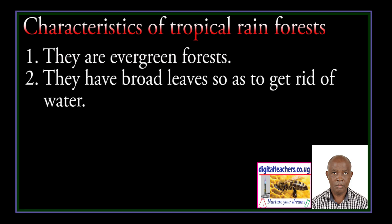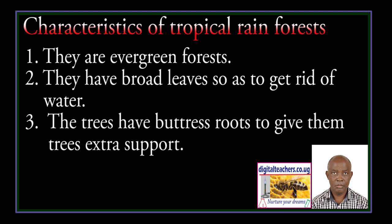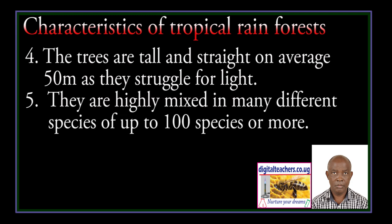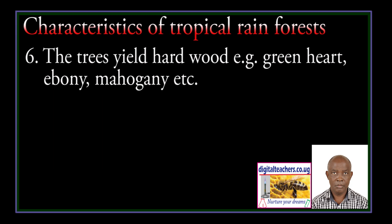Characteristics of Tropical Rain Forests: They are evergreen forests. They have broad leaves so as to get rid of water. The trees have buttress roots to give them extra support. The trees are tall and straight, on average 50 meters, as they struggle for light. They are highly mixed in different tree species of up to 100 species or more. The trees yield hardwood, for example Green Heart, Ebony, Mahogany, and so on.